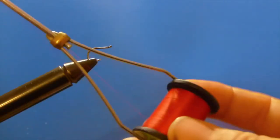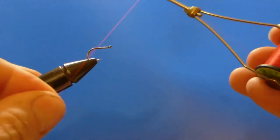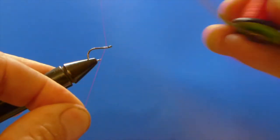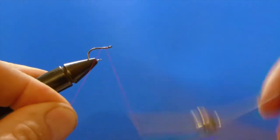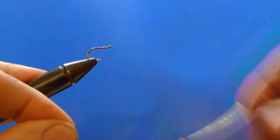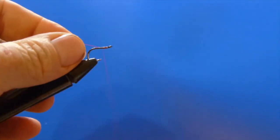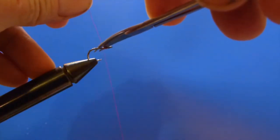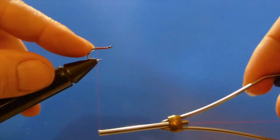So we're just going to tie in our thread on the hook itself and then we're going to wrap the hook shank with our red thread. Just going to cover up that black color of the hook itself, so from the underside the hook is red as well.